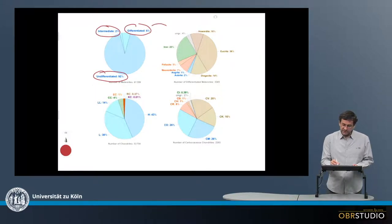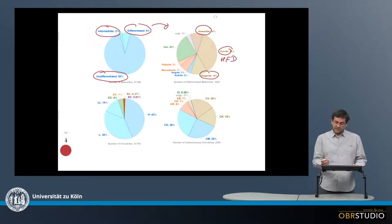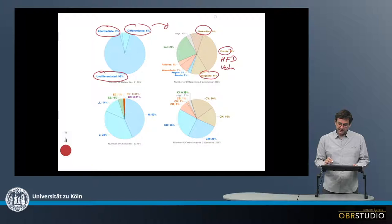Now when we look at the differentiated meteorites, most of these are Howardites, Eucrites, and Diogenites, which collectively are called HED meteorites and are thought to come from the asteroid Vesta. So these are all mantle rocks.